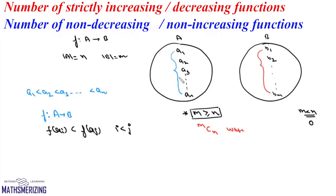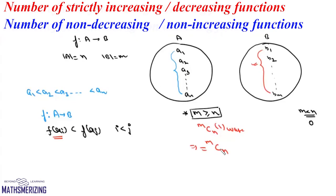Now we have N elements in A and N selected elements in B. We must map each element in A to an element in B such that F(Ai) < F(Aj). The selected N numbers in set B must be mapped to elements in A in ascending order. The number of ways to arrange N distinct elements in ascending order is exactly one. So the number of strictly increasing functions — and likewise strictly decreasing functions — from set A to set B is MCN when M ≥ N, and zero when M < N.